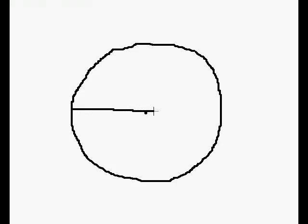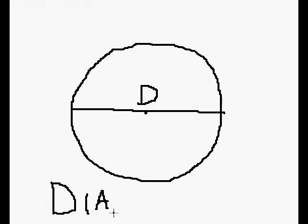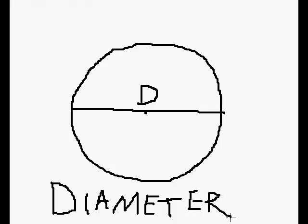Now, next we draw a line from one side of the circle to another side. This full line is called D. And this is called D — the diameter.